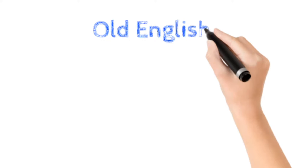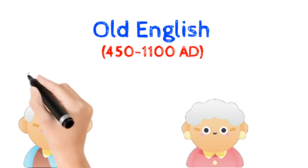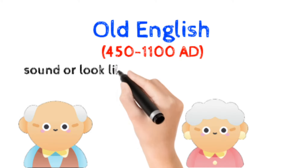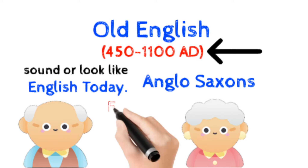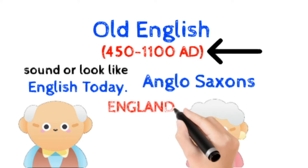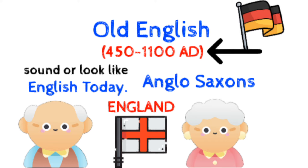Number 1: Old English, 450–1100 AD. Old English did not sound or look like English today. Old English was spoken and written between 450 and 1100 AD. Anglo-Saxons spoke this language, who came from the part of England which is now Germany.